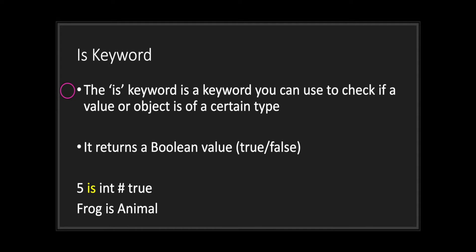Now I want to introduce a new keyword: the `is` keyword. The `is` keyword can be used to check if a value or object is of a certain type, and it will return a boolean value — either true or false.